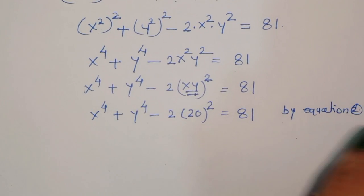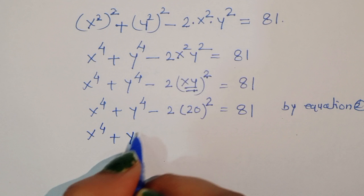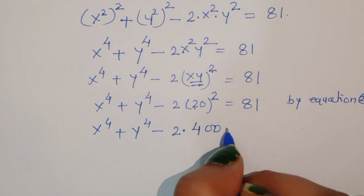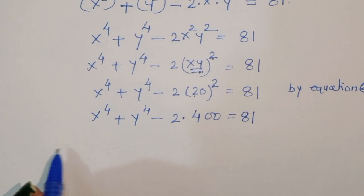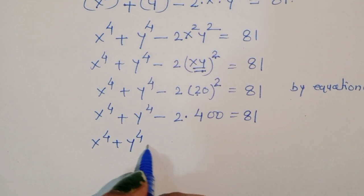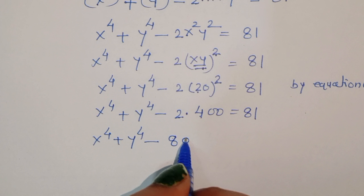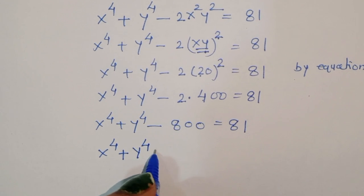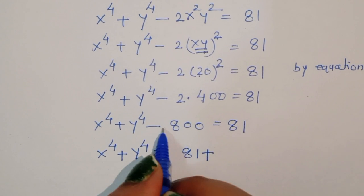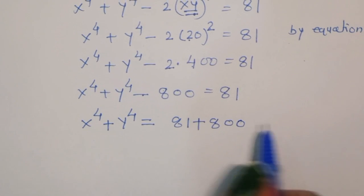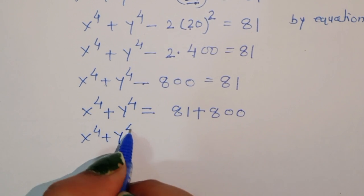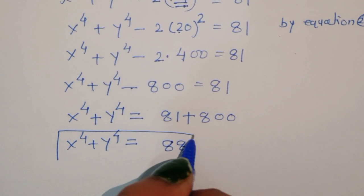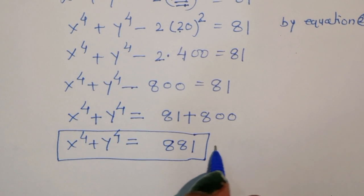By equation two, xy equals 20, so substituting: x to the power 4 plus y to the power 4 minus 2 times 20 squared equals 81. That gives x to the power 4 plus y to the power 4 minus 800 equals 81. Therefore x to the power 4 plus y to the power 4 equals 881. This is equation number three.